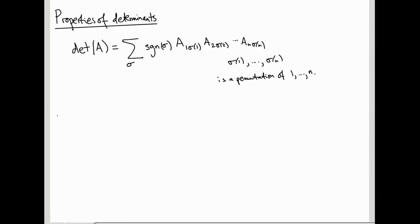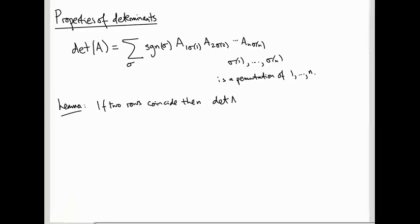In this video, we're going to prove some properties of the determinant, which will prove very useful for computing it. First, a lemma: if two rows coincide — meaning the same numbers appear on two rows — then the determinant is zero. For example, the matrix with rows (1,1,0), (1,1,0), (2,4,5) has determinant zero because the top row and the second row coincide.